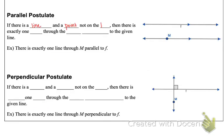Our parallel postulate states that if there's a line and a point not on the line, then there's exactly one line through the point that is parallel to your given line. So if we have line F that was given there and point M, there is no other line that we could draw through point M that would be parallel to line F.